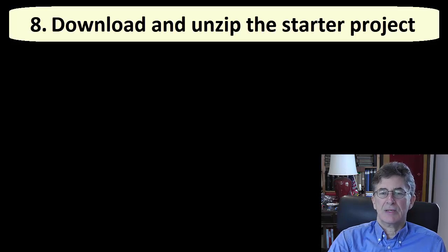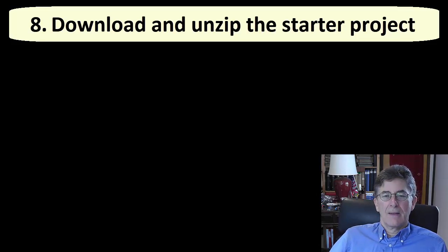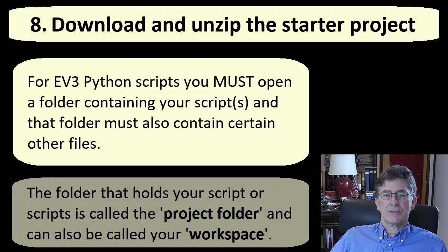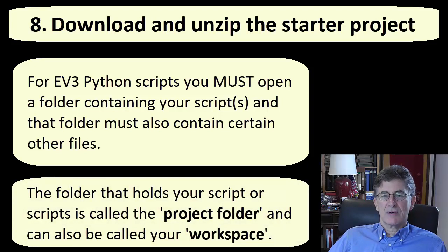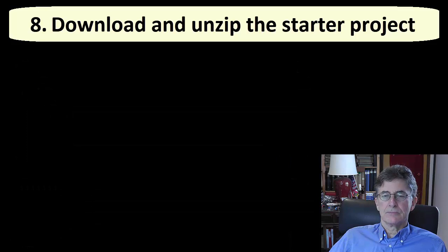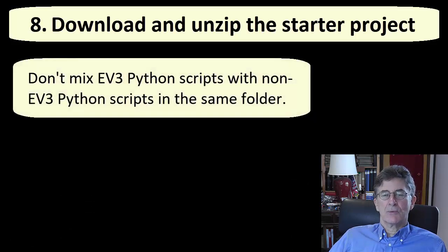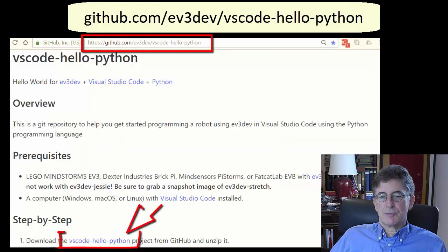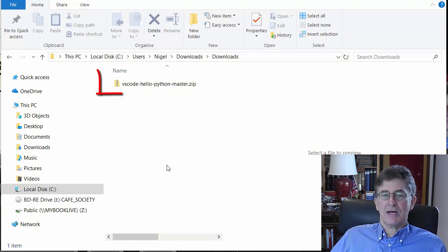Download and unzip the Starter EV3 Python project. In order to be able to run your EV3 Python scripts on the EV3 from VS Code, you must have open in VS Code a folder that contains your script and certain other files. The folder that holds your script or scripts is called the project folder. Don't mix EV3 Python scripts with non-EV3 Python scripts in the same folder because they need to be launched in different ways. Go to the address on the screen and follow the first step there to download the starter project called VS Code Hello Python, which downloads as a zip file called VS Code Hello Python master.zip.